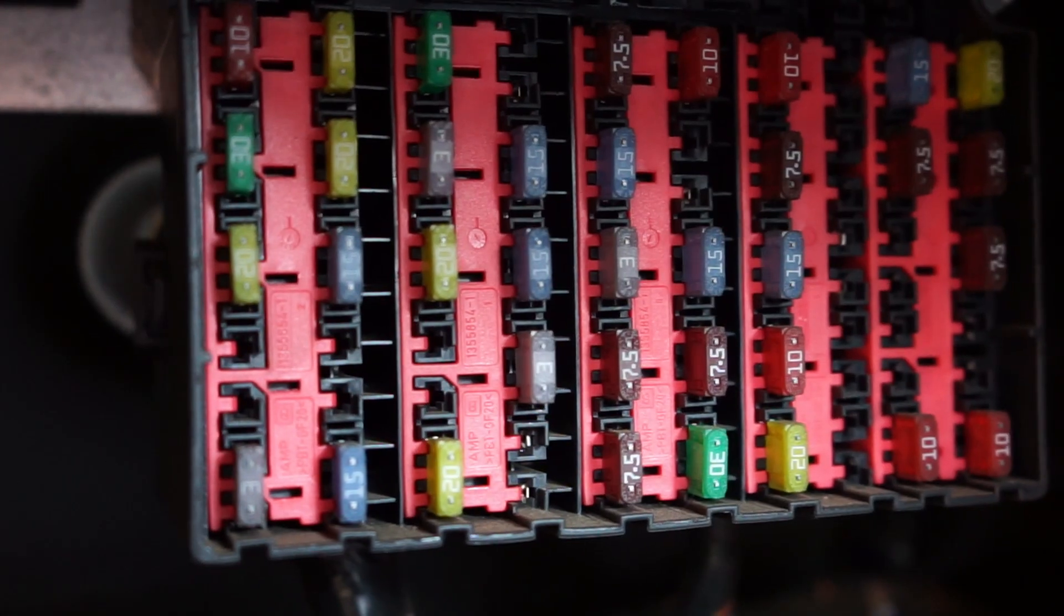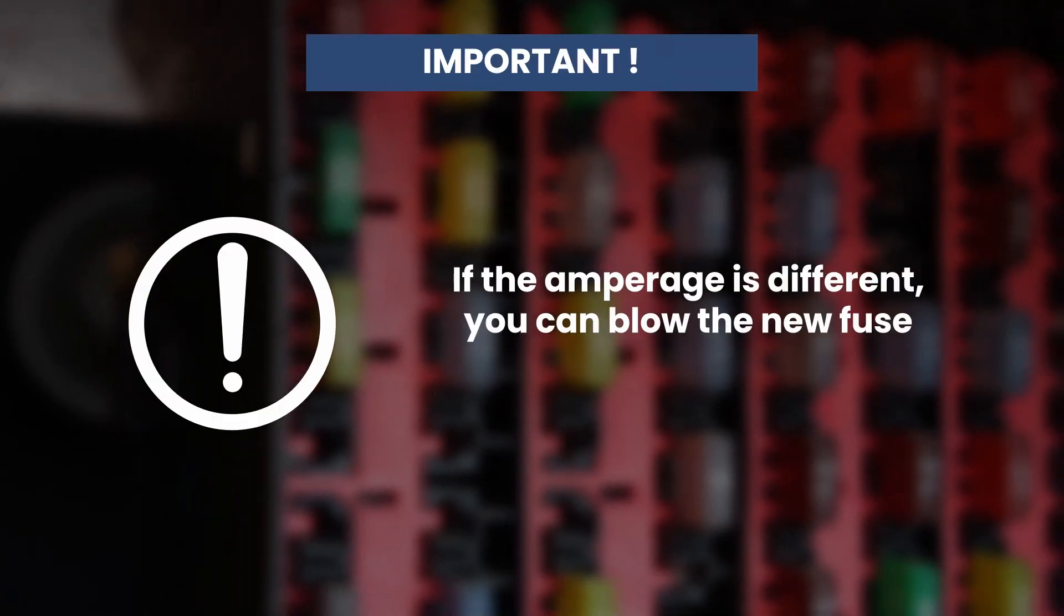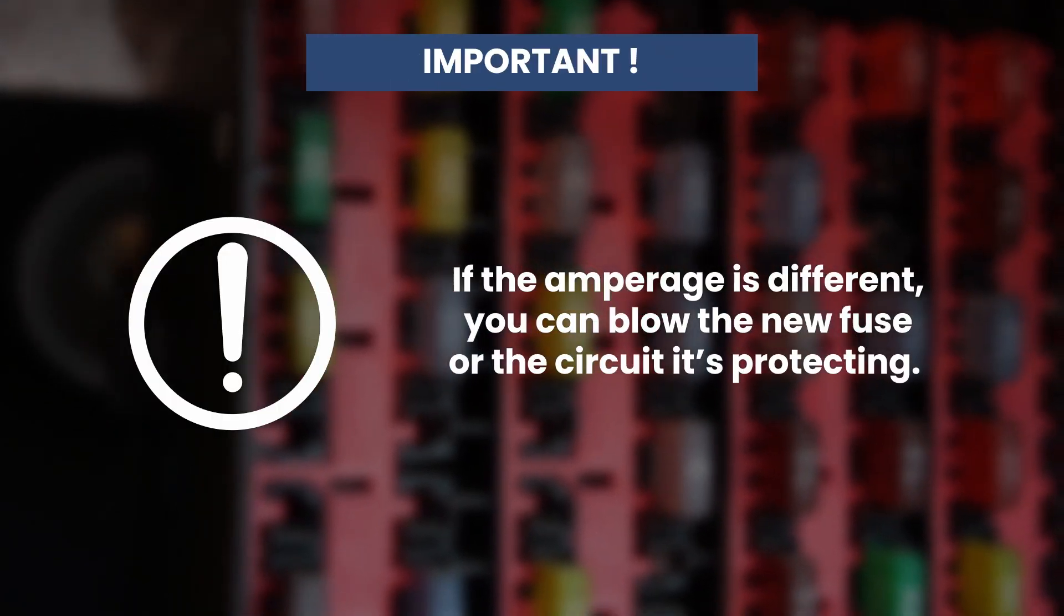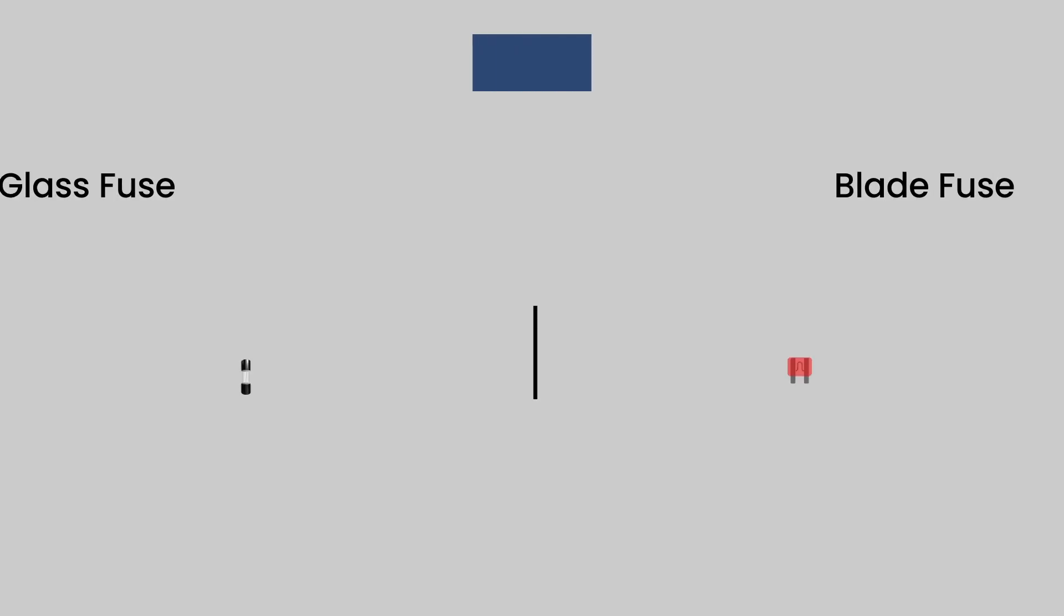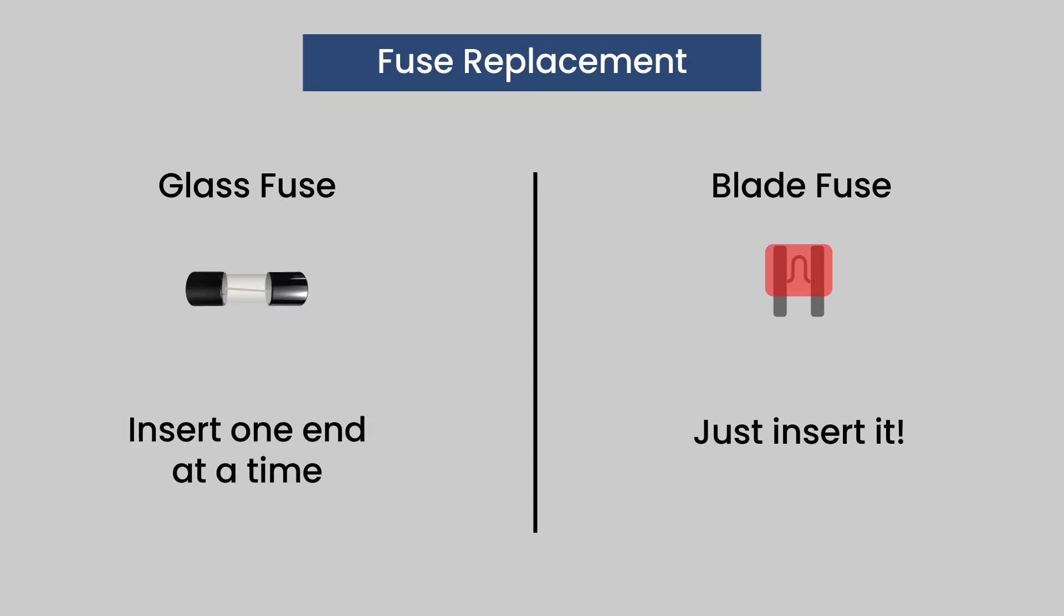If the amperage is different you could blow the fuse again or damage the circuit that the fuse is protecting. When inserting the new fuse the actual process is straightforward - just insert it. However, with the older glass fuses you need to press the ends in one at a time.